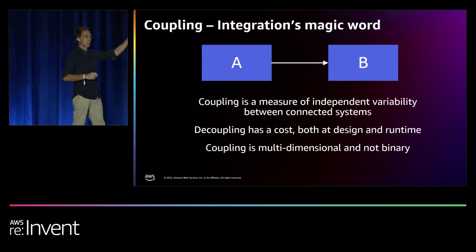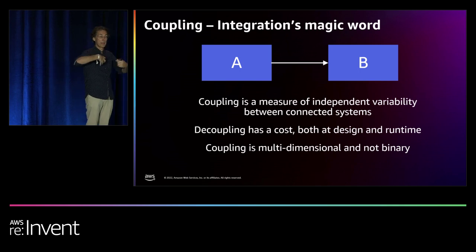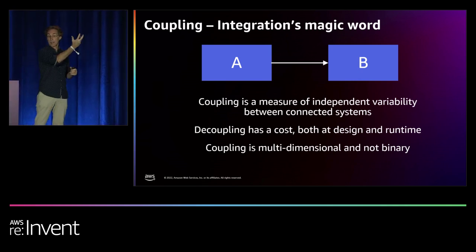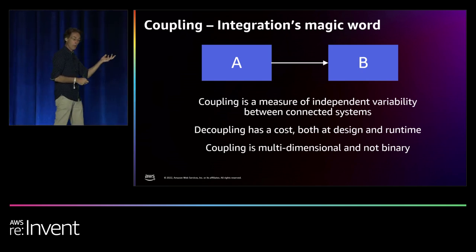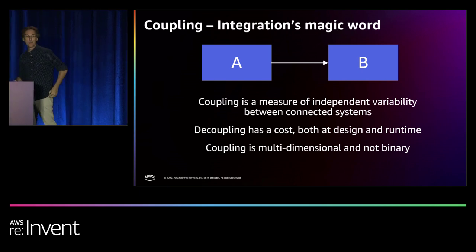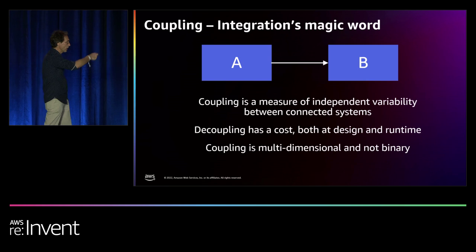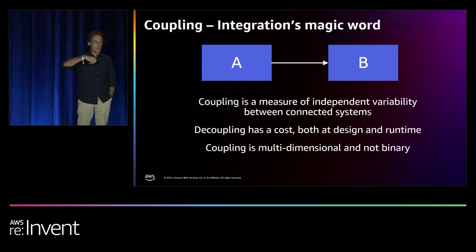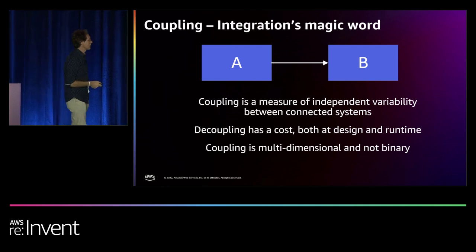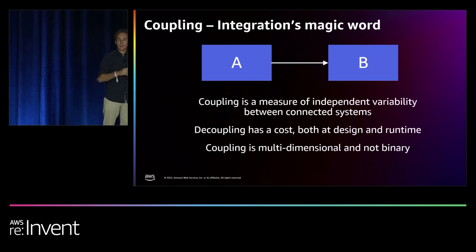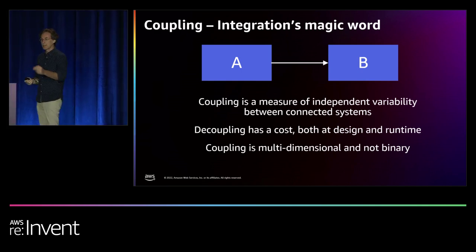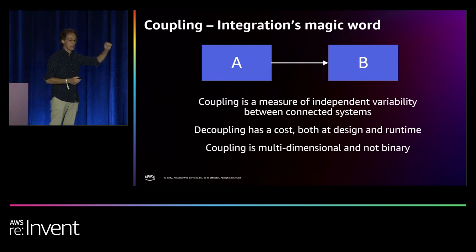Coupling is a measure of independent variability, or vice versa — dependency between systems. If you make a change over here, does that imply a change over there? Change can happen at design time, but also at runtime: high latency or a system going down. Nothing is ever free — decoupling systems reduces dependency and increases independent variability, but it comes at the cost of more moving parts, partial failures, asynchrony, and marshalling overhead. And it's not like you're coupled or not coupled — it's actually multidimensional and not binary.